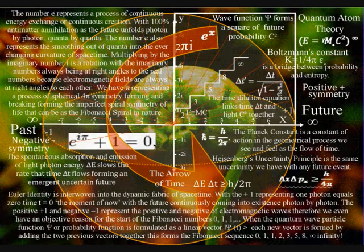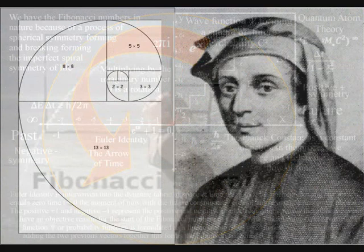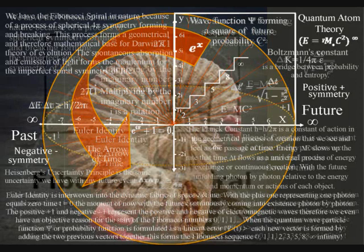The Fibonacci spiral can be seen in living and non-living things that are formed over a period of time, representing the broken symmetry of this process that forms the passage of time.